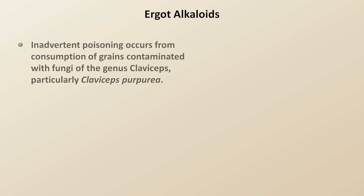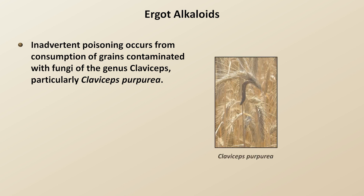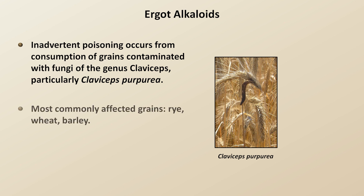The last type of mycotoxin poisoning, that from ergot alkaloids, is the most interesting of the three. Inadvertent poisoning occurs from consumption of grains contaminated with fungi of the genus Claviceps, particularly Claviceps purpurea. We can see evidence of such an infection here, with that dark brown structure hanging down from the grain in the middle — this is called a sclerodium, and it contains a very high concentration of these compounds. Claviceps most commonly infects rye, wheat, and barley.